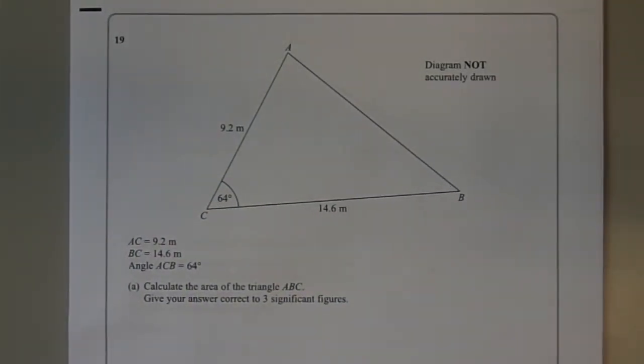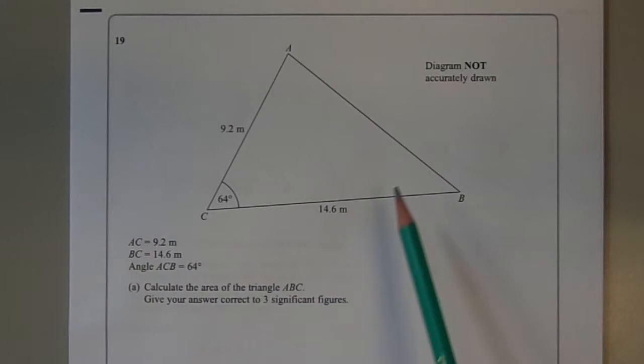Question number 19, part A: calculate the area of triangle ABC. Give an answer to three significant figures.